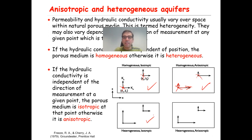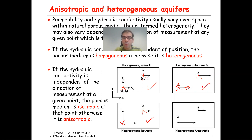This case is an example of heterogeneous but isotropic system. Why? Because depending on the location of your measurement here versus here, you're getting a different value of permeability and hydraulic conductivity, so by definition this is a heterogeneous porous media. But the value of the permeability is independent of the direction of measurement — in both the vertical and horizontal directions the permeability is the same — so that is an isotropic system.